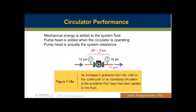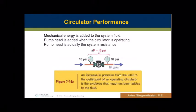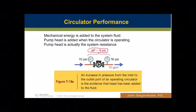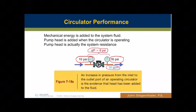The mechanical energy added into the fluid — the pump head being added to overcome system resistance — is what we're looking at. In this picture, I've got a pressure delta P of 6 PSI across the pump: 16 PSI on the discharge side and 10 PSI on the inlet side. The amount of energy or pressure being added is 6 PSI.